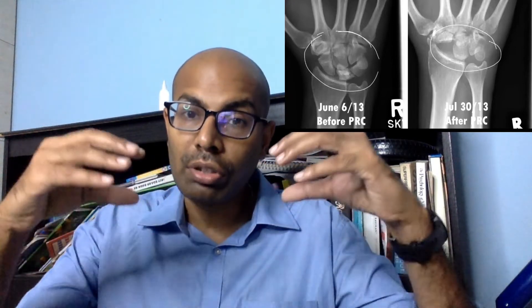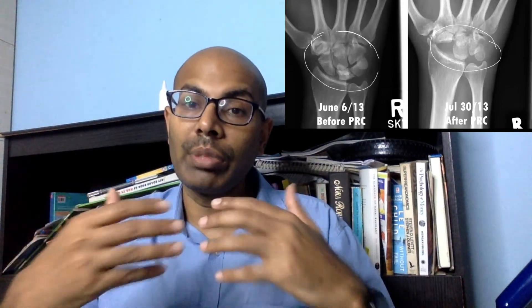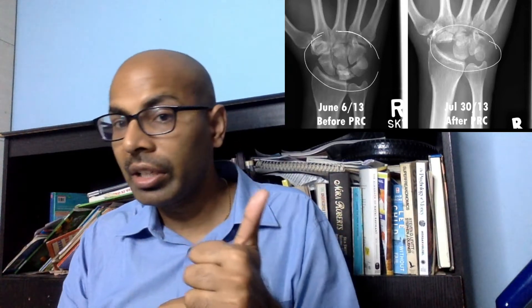In stages three and four, these procedures may not be sufficient and we have to do what is called salvage procedures. The salvage procedures include something called a proximal row carpectomy, where we remove the three bones closer to the body — the upper three bones — and a new joint is formed by the capitate bone. In this case your pain completely goes away, you will retain some range of motion, and your grip strength will come back to almost 90 percent. If all else fails and there is arthritis that sets in at the wrist joint, then you may have to do a wrist fusion.